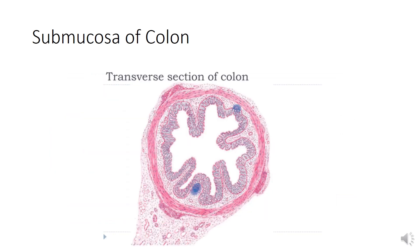This is a transverse section of the colon showing the layers of the wall. This is the mucosa, and this layer is the submucosa. The submucosa consists of dense connective tissue containing larger blood vessels, lymphatics, and the Meissner's plexus of nerves.